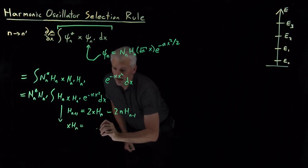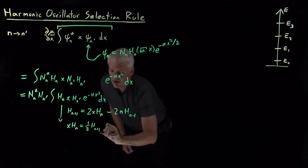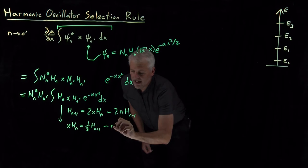I'll have 1 half H_n plus 1 minus, after dividing by 2, that 2 goes away and I've just got n times H_n minus 1.